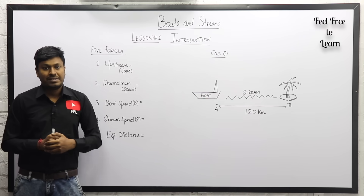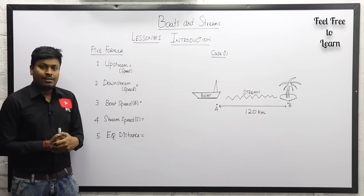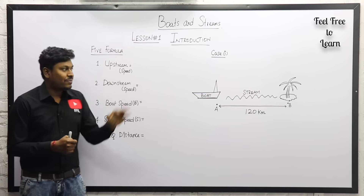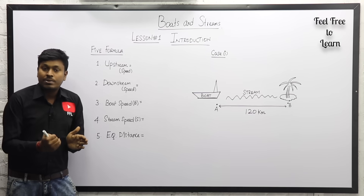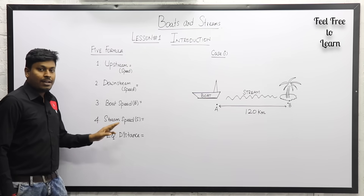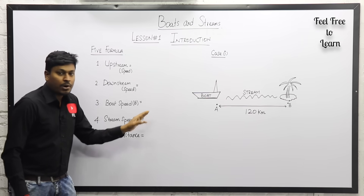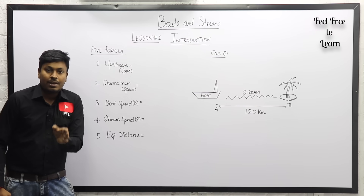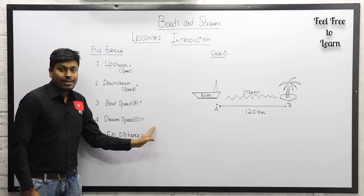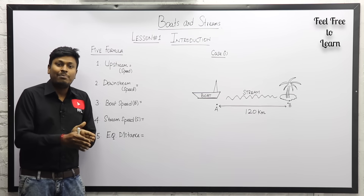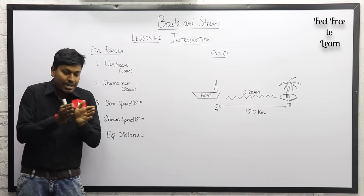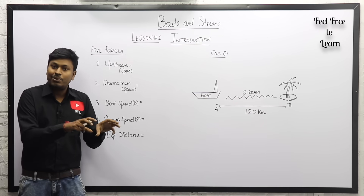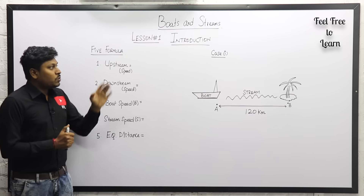In the topic Boats and Streams, we have only five important formulas: upstream speed, downstream speed, boat speed, stream speed, and equating the distance. If you know these five formulas, 70 to 80 percent of questions can be solved. Do not by-heart these formulas — try to understand how they are derived, so you can solve higher-level questions like CAT, GATE, etc.